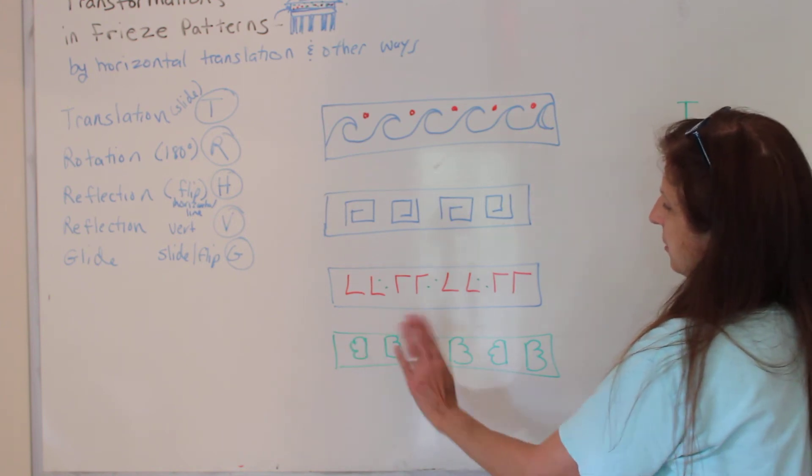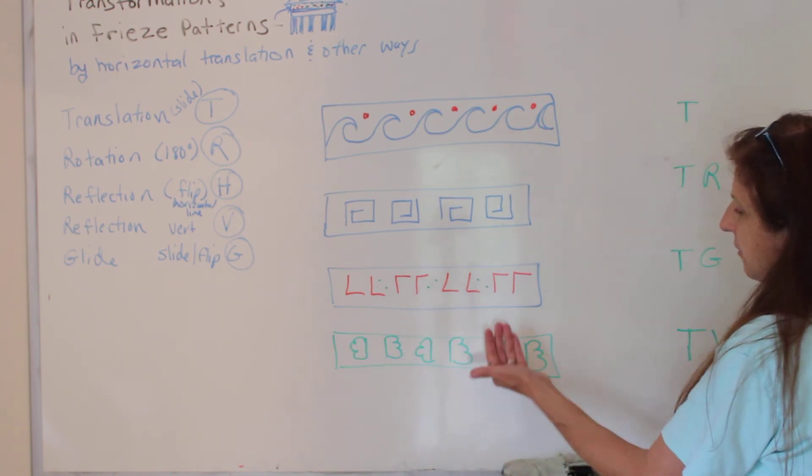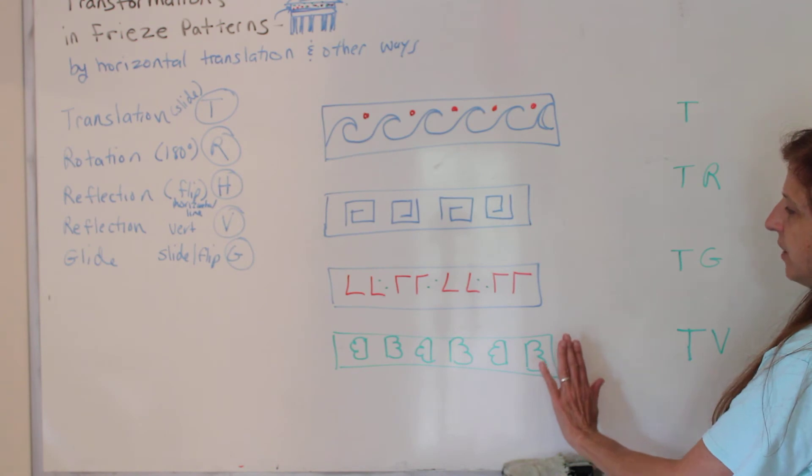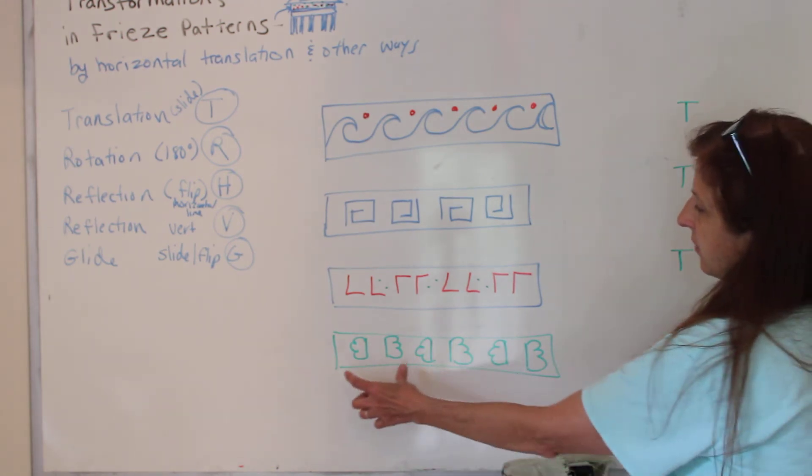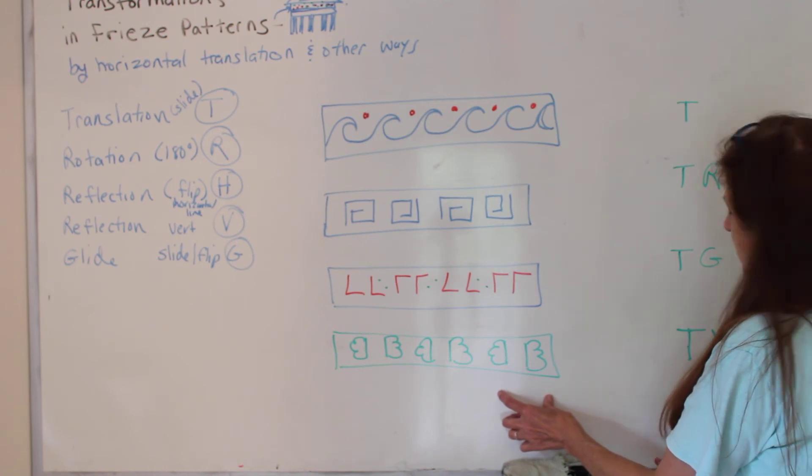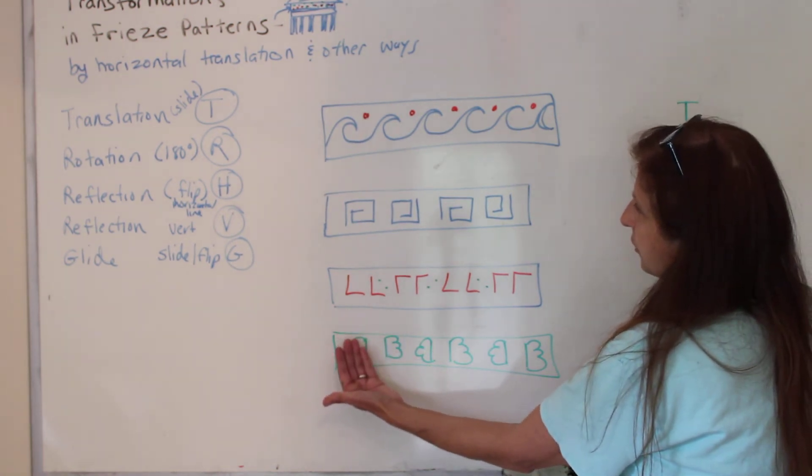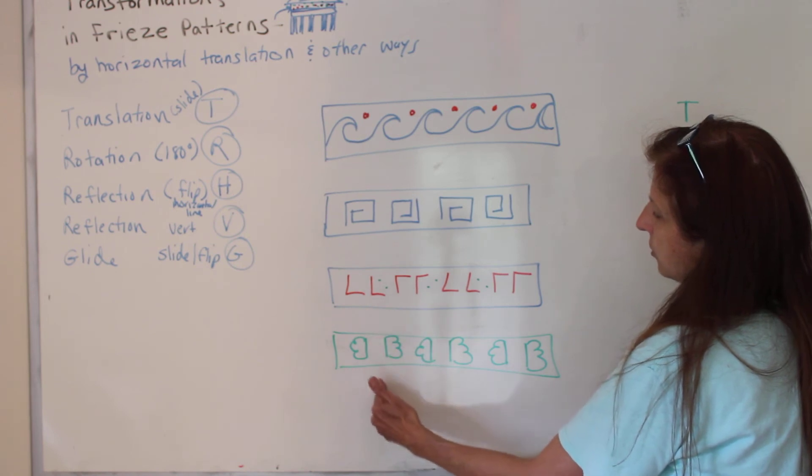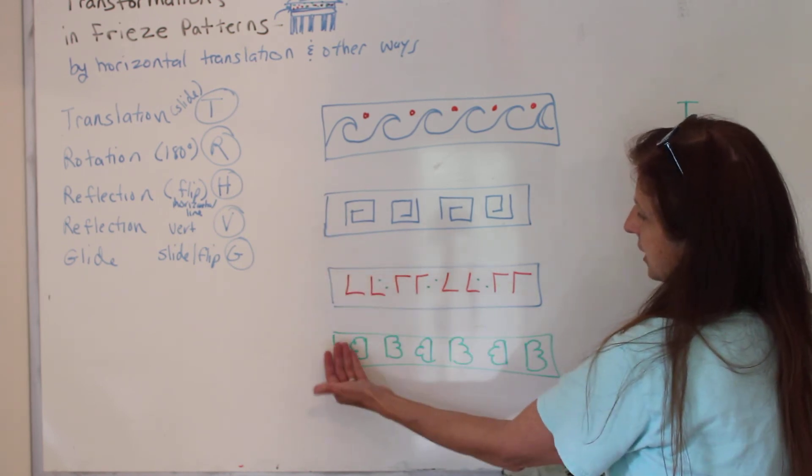So how about this one? It's like half a butterfly the other half, half a butterfly the other half, half a butterfly the other half. Can you slide it? Yes. From here to here to here. So it is a translation. And then it's also you're flipping over a vertical line. So it's a reflection vertical.